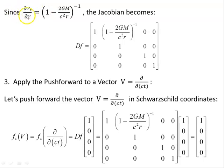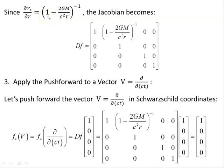Now ∂r★/∂r is this object here. Performing that partial differentiation gives us this result. The Jacobian then takes this explicit form.